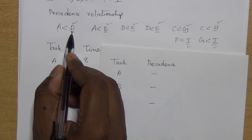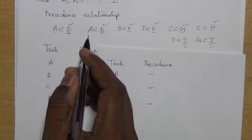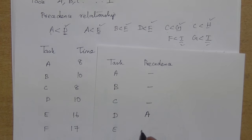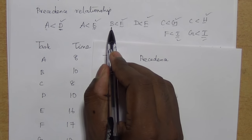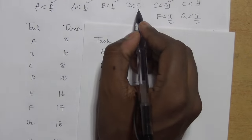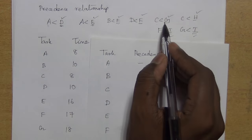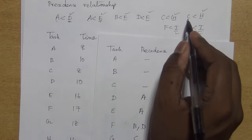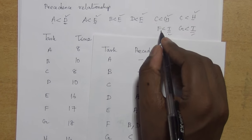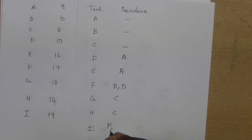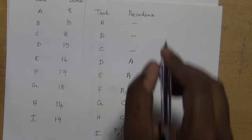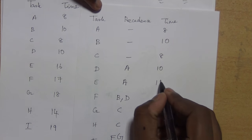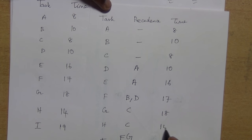But D is in the RHS and its predecessor is A, so we write A here. Similarly E is there, its predecessor is A. For F we have B and also D as predecessors. For G we have predecessor C. For H we have C, and for I we have F and G. The time values are: A=8, B=10, C=8, D=10, E=16, F=17, G=18, H=14, I=9.